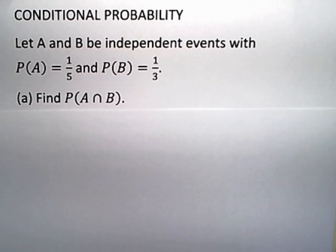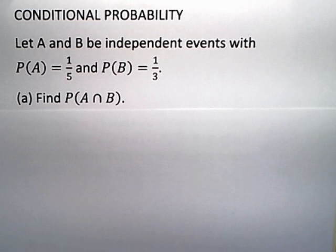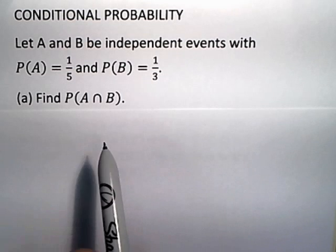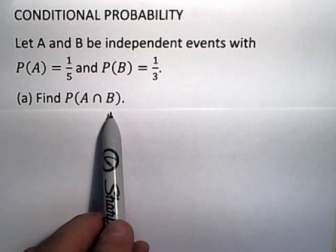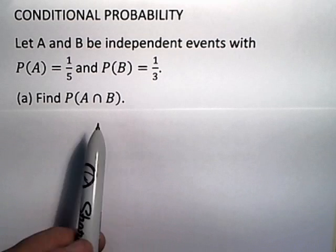Let A and B be independent events with the probability of A equal to one-fifth and the probability of B equal to one-third. We're going to answer two questions, the first of which is: find the probability of A intersect B.